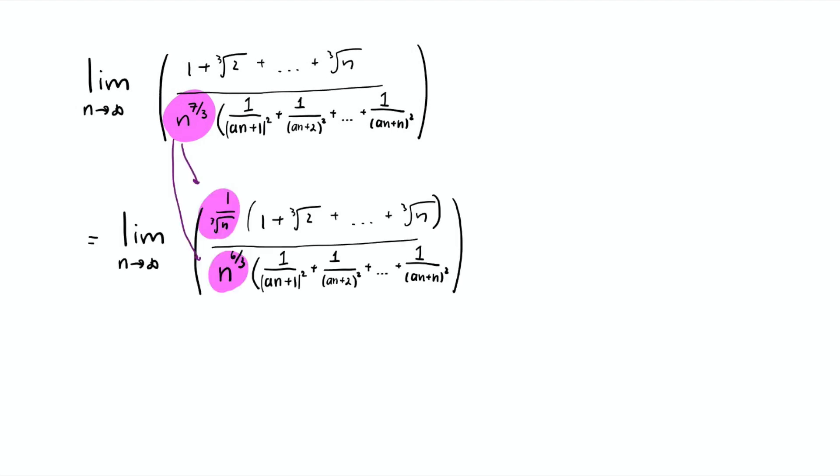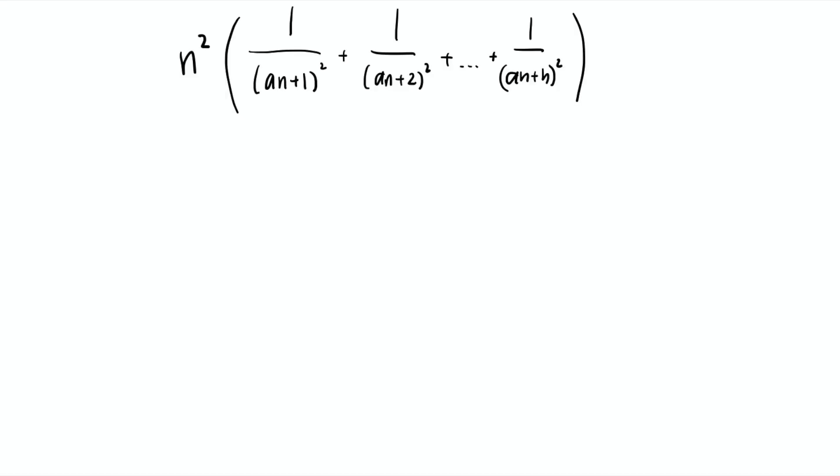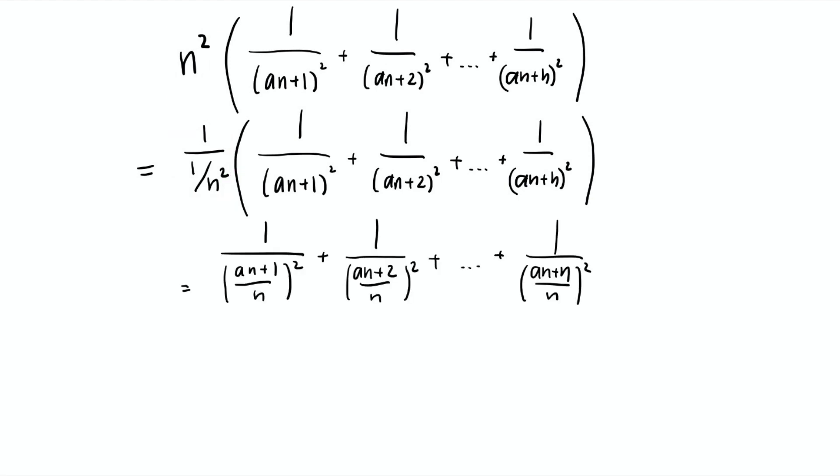To get that 1 over cube root of n, we take that 1 over cube root of n from n to the 7 over 3, so it's left with n to the 6 over 3, which is n squared. That n squared is the thing that we use to fix the bottom. We're gonna multiply n squared through. From n squared in the numerator, we change it into 1 over n squared in the denominator. After some simplification, we have a plus 1 over n squared, a plus 2 over n squared, a plus 3 over n squared, and so on, which matches what we want in terms of Riemann sum.